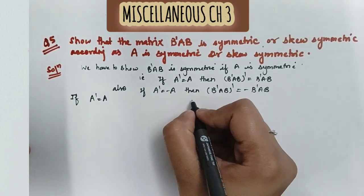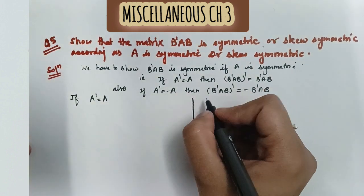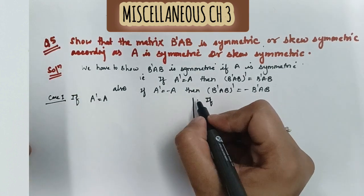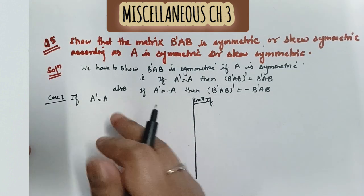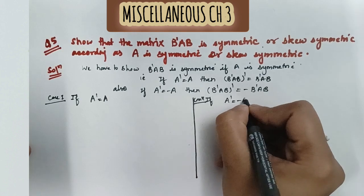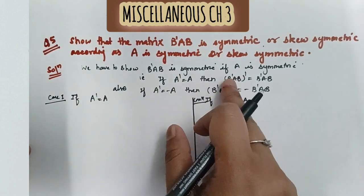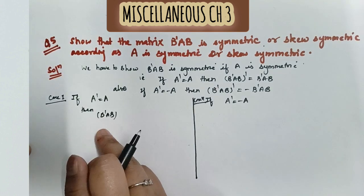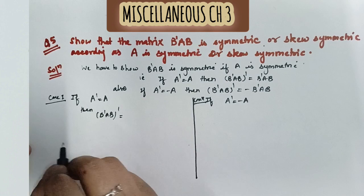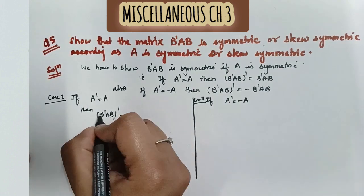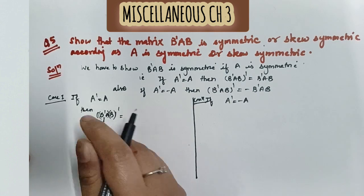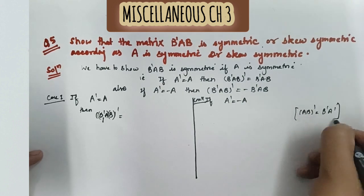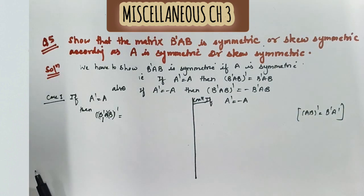I am doing both cases simultaneously. Case 1: if A transpose equals A. Case 2: if A transpose equals minus A. Then accordingly we show B'AB is symmetric or skew-symmetric. To open the transpose, we use the result: (AB) transpose equals B transpose A transpose. Now let's apply this to B'AB.